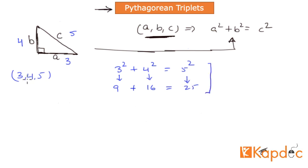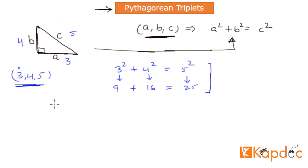Now the question is, this is one example in which we know all three numbers. Most of the time, you will not be given all three numbers. Sometimes we are given a problem in which we know only one of those three numbers — such as either 3, or 4, or 5. We don't know all the other numbers, but based on the problem statement, we are supposed to find what the other two numbers are.